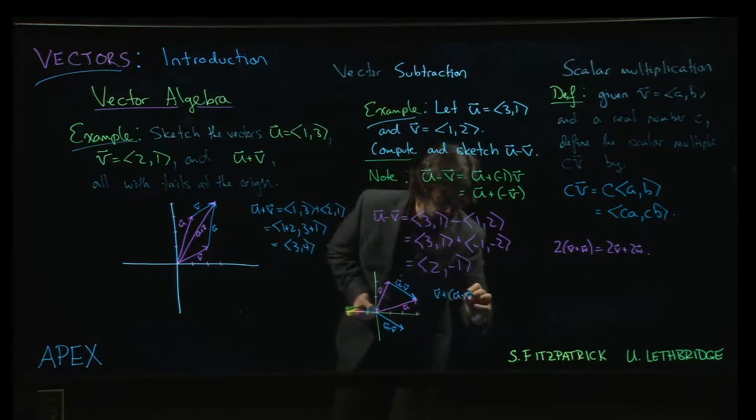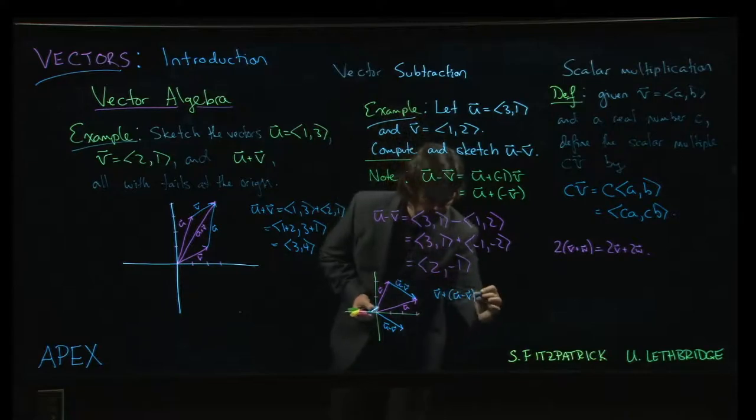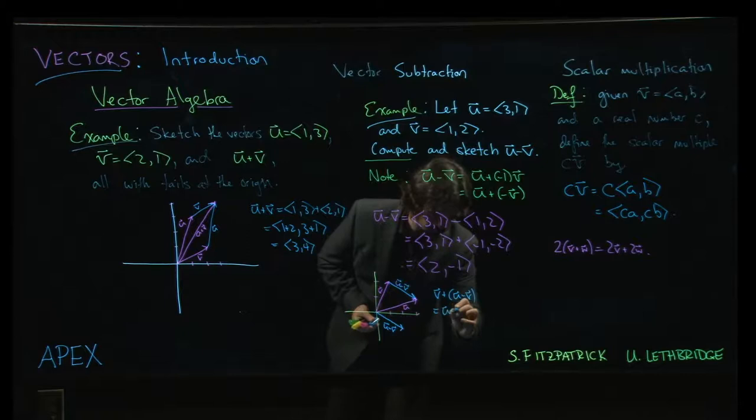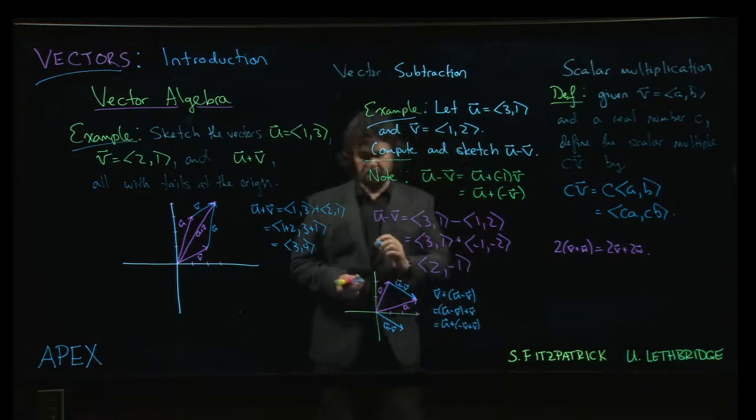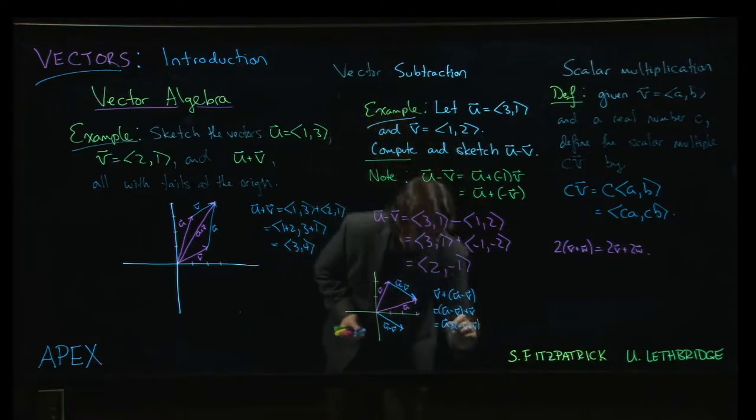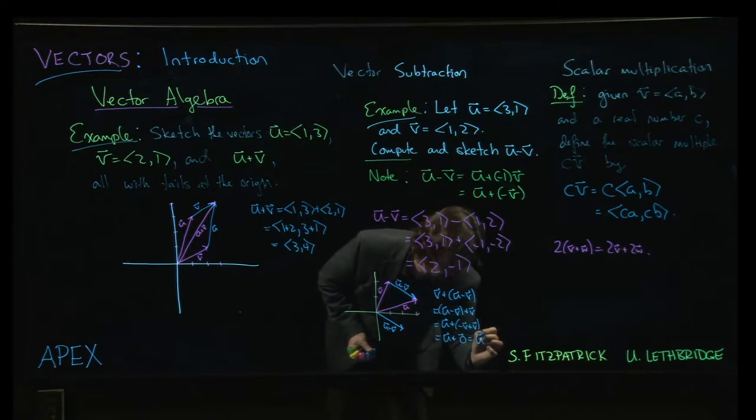and I add u minus v, we expect that should be the same thing as doing u minus v plus v, of course it is. And then we can say well that's the same as doing u plus minus v plus v. But then the whole point of minus v is that when you add it to v you get zero, and so the result is u.